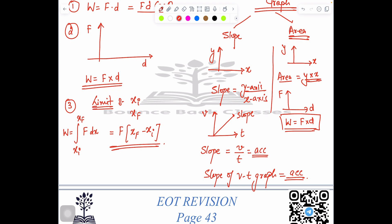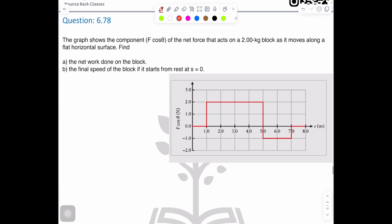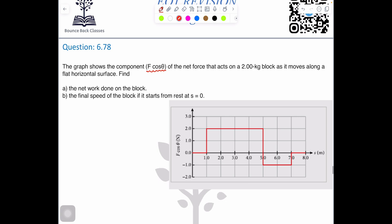Let's move to the real question. The graph shows the component F cos θ. Remember, work done equals F dot d which equals F d cosine θ. You can separate them: F cos θ is one quantity and distance is the second quantity. Distance you can use in terms of d, r, or x depending upon the question. The graph shows the component F cos θ, the net force that acts on a 2 kg mass as it moves along a horizontal surface. Find the net work done on the block.